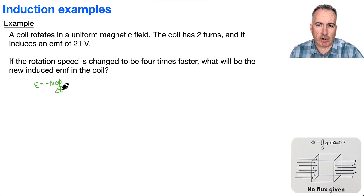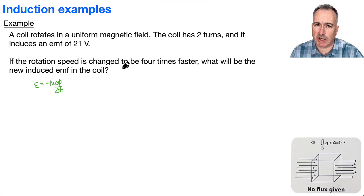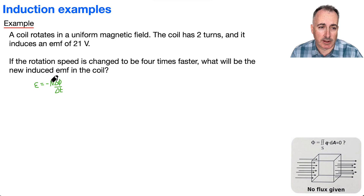which is: induced EMF equals minus N times delta phi over delta T. Now, we're given the fact that the coil has two turns. But in the new situation, do we change the number of coils? No. So actually, that's irrelevant — that's a piece of information we didn't need.